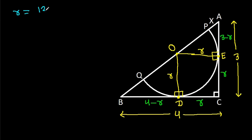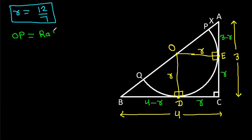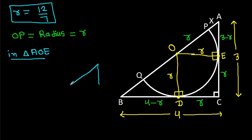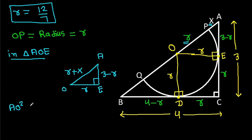We get R equals 12 by 7. Now OP will also be the radius, equal to R. In right triangle AOE, OE is R, AE is 3 minus R, and AO will be R plus X. This angle is 90 degrees, so AO squared equals AE squared plus OE squared.